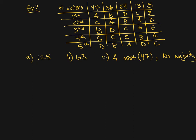One of the ideas inherent in this is transitivity. Transitivity means that if you prefer candidate A over B and B over C, then you would prefer A over C. For example, the 47% who listed A first prefer A over C, C over B, B over E, E over D — so that means they prefer A over B. Making this assumption is important so we understand what's happening inside these preference ballots.